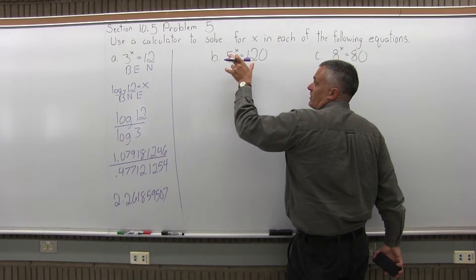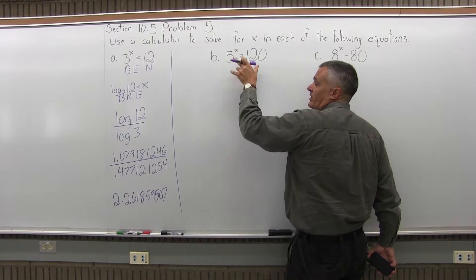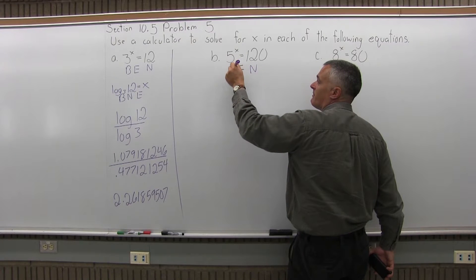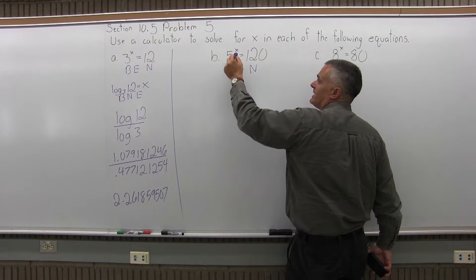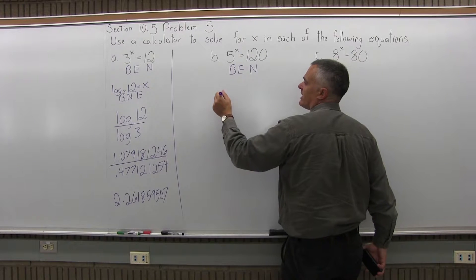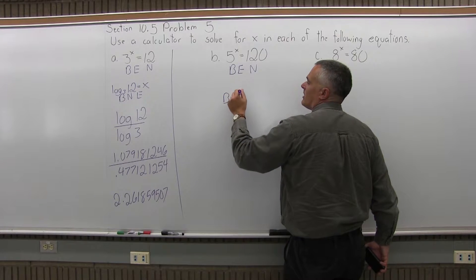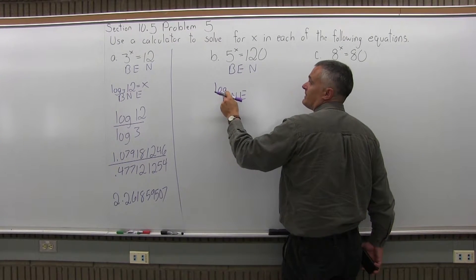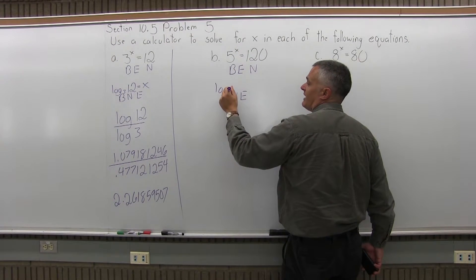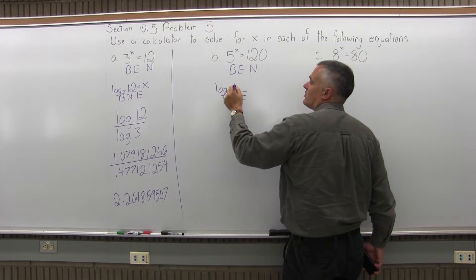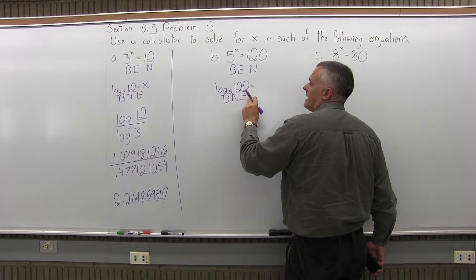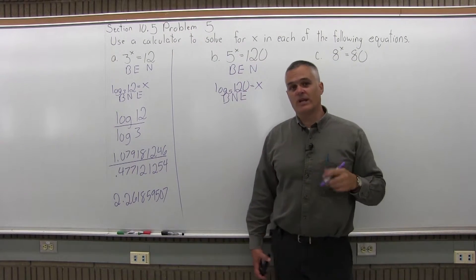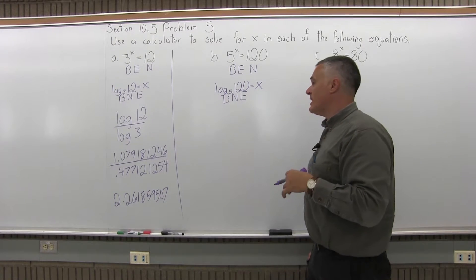So again, first convert this from an exponential equation to a log equation. So to do that, I'm going to write Ben underneath. B-E-N for base exponent number. The base is 5, the exponent is x, and the number is 120. And in log form, I'm going to write Benny. B-N-E, still for base number exponent. You write the word log first. Then you put the base as a subscript, which is 5. Then next comes the number, which is 120. And then equals. And then E for exponent is x. It's the unknown. So I have log base 5 of 120 equals x. I have to figure out log base 5 of 120.